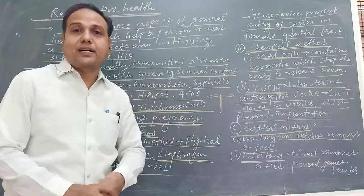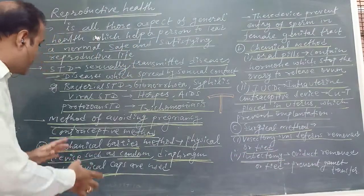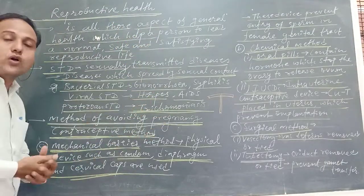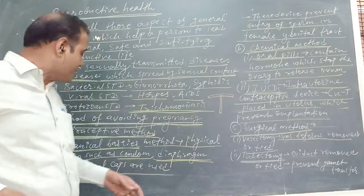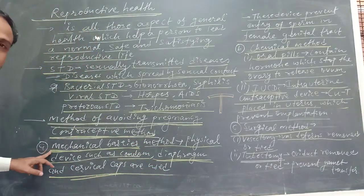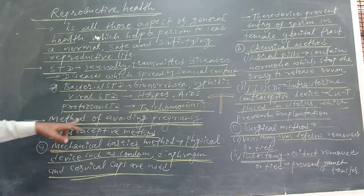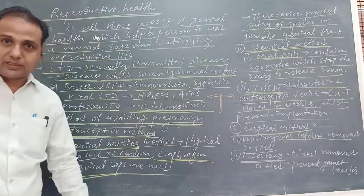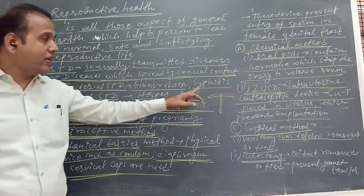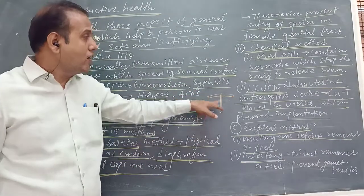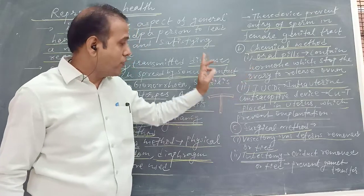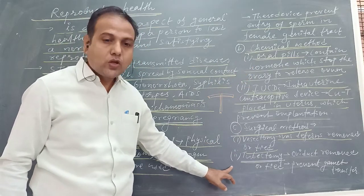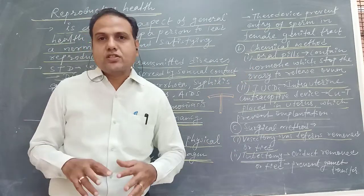A five-mark question could be: What do you mean by contraceptive method? Explain in detail. You have to describe three methods: first, the mechanical method; second, the chemical method; and third, the surgical method. Other possible questions include: What are oral pills? What is vasectomy? What is tubectomy?